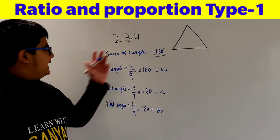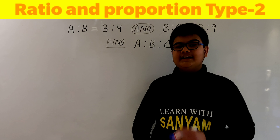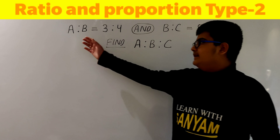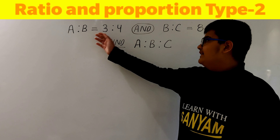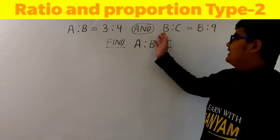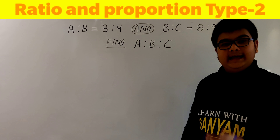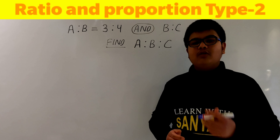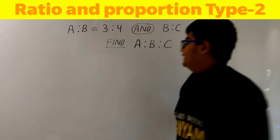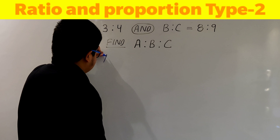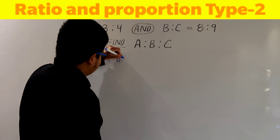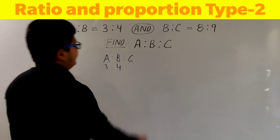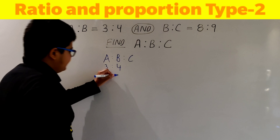In this way we can apply this trick to such questions. Now let's discuss trick number 2. In this type of question, we are given that A:B = 3:4 and B:C = 8:9, and we have to find A:B:C.